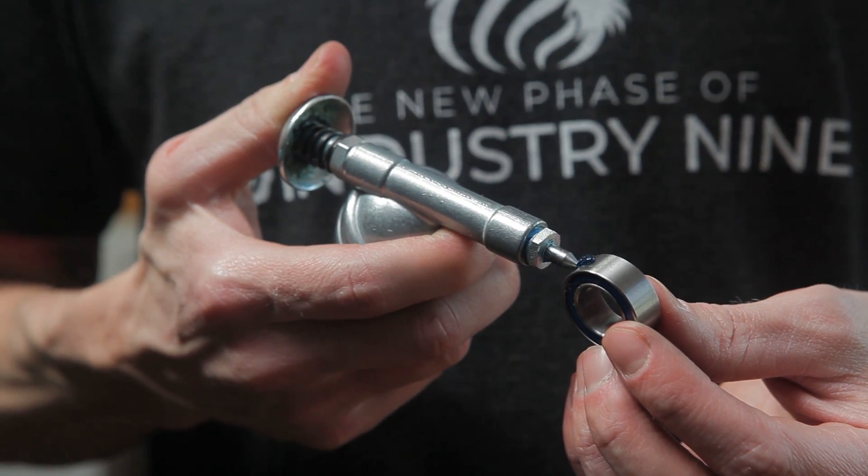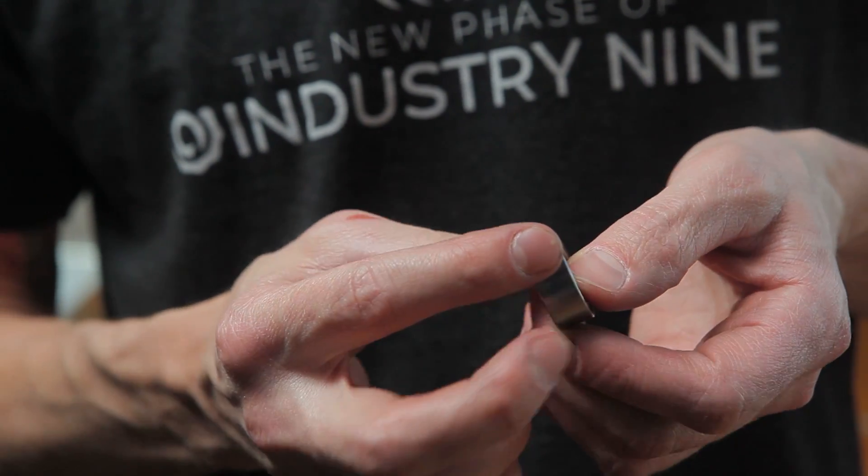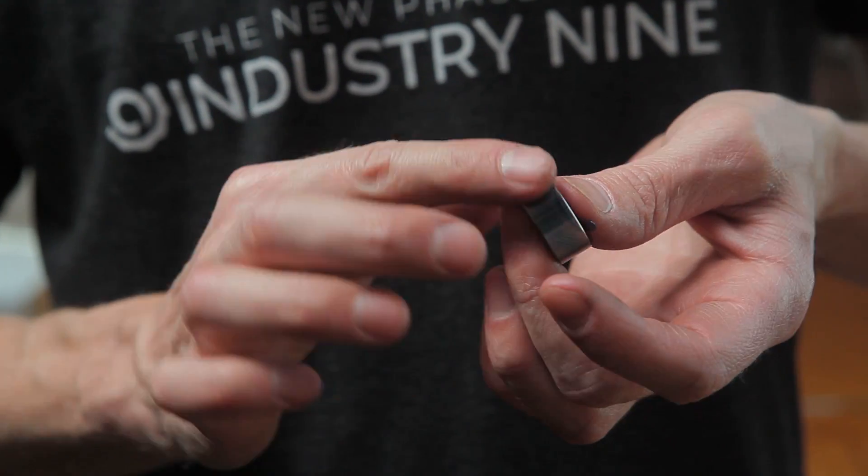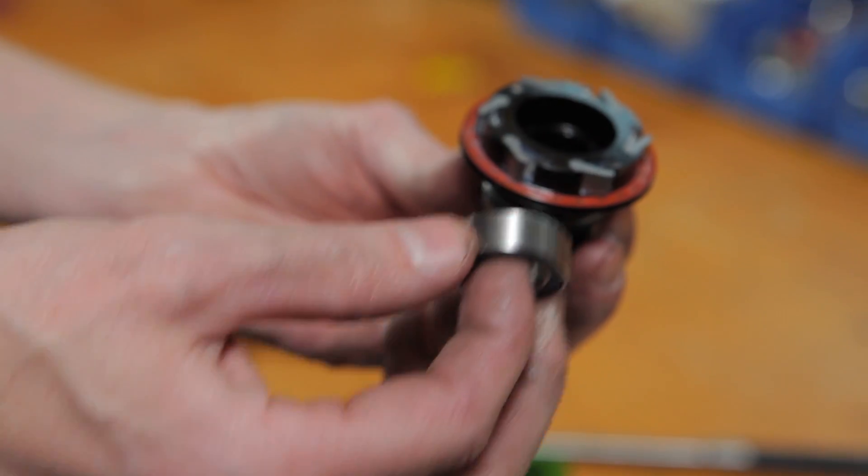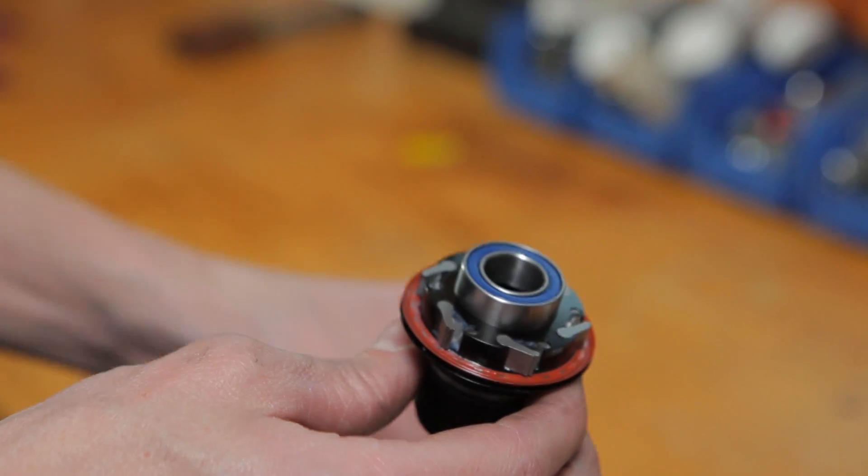Just like with your hub shell bearings, put a light coating of grease on the outside before pressing. For the freehub, you'll press one bearing at a time. Start with the double-row bearing. This is the inboard position of the freehub body.